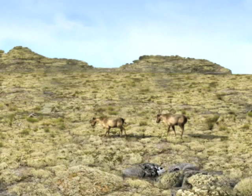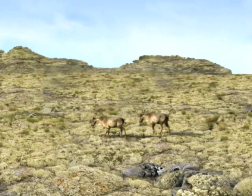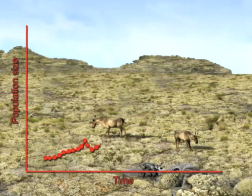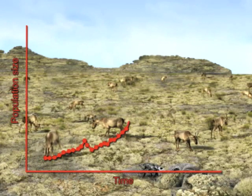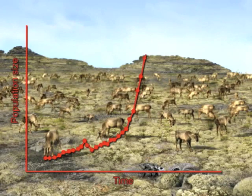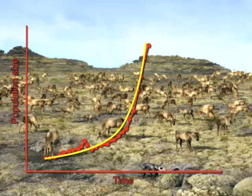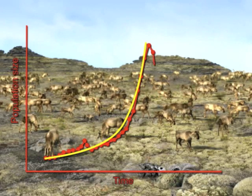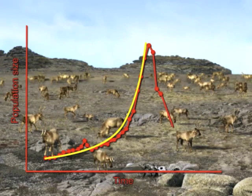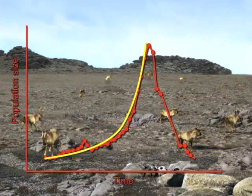Now let's look at the pattern of growth in this reindeer population. At first, the reindeer had plenty of food. The population grew slowly, and then grew faster and faster as the population got bigger. This pattern is exponential growth, which occurs when a population has unlimited resources. Of course, resources are never truly unlimited. As the reindeer population exploded, food ran out, and the population crashed. Exponential growth cannot continue forever.